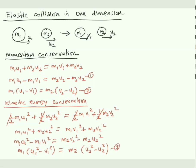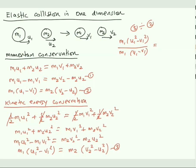Now divide equation three by equation two. The left-hand side becomes m1(u1² − v1²) divided by m1(u1 − v1), and the right-hand side becomes m2(v2² − u2²) divided by m2(v2 − u2). The masses cancel on both sides.